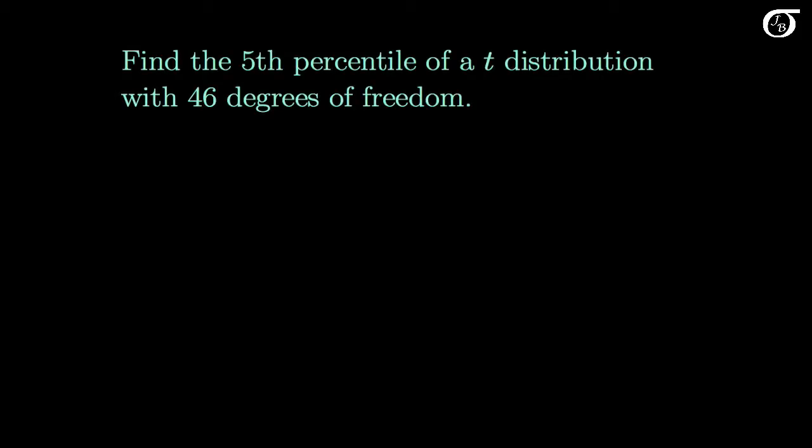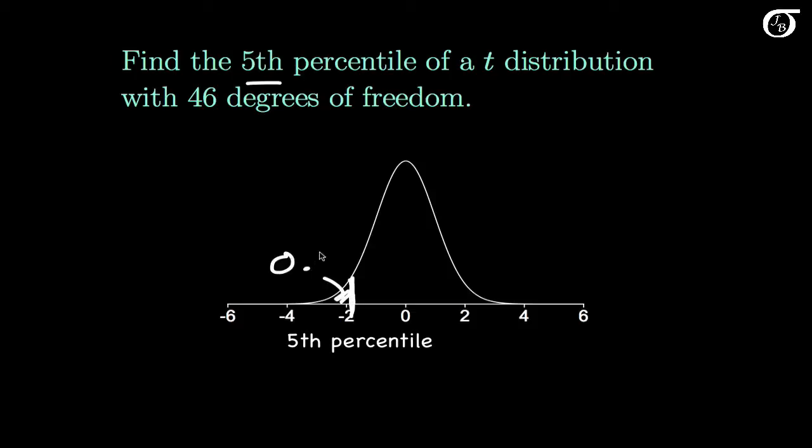Now suppose we need to go in the other direction. Suppose we need to find the 5th percentile of a t-distribution with 46 degrees of freedom. So I'm going to draw in a t-distribution with 46 degrees of freedom. And the 5th percentile is the value of the variable such that the area to the left is 0.05, or 5%. So we need the area to the left to be 0.05, and the value of the variable that makes that happen is the 5th percentile.